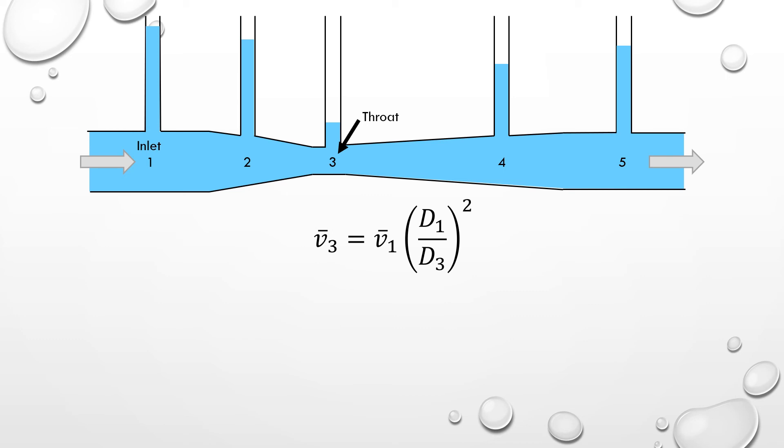Here, the velocity increases proportionally to the square of the inverse diameter ratio. Due to this squared relationship and the decreasing diameter from the inlet to the throat, we can see that the velocity must be much higher at the throat than at the inlet.